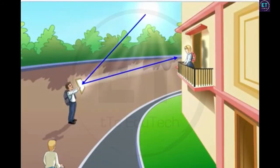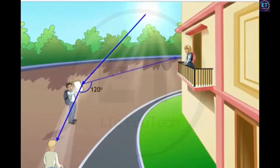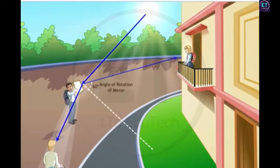Thus, for a given incident ray, if the plane mirror is rotated through a certain angle, then the reflected ray rotates through twice that angle. Hence, for the given problem, if the child has to direct the rays to a person standing 120 degrees apart, he has to rotate the mirror through an angle equal to half of 120 degrees, that is 60 degrees.